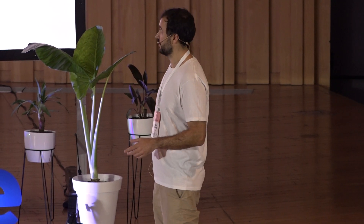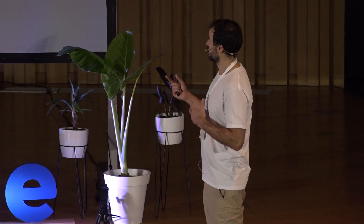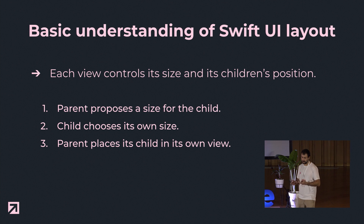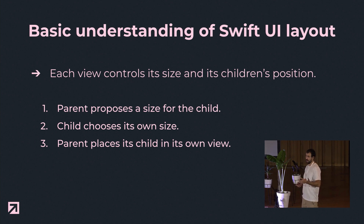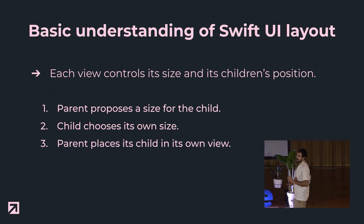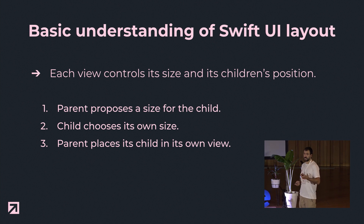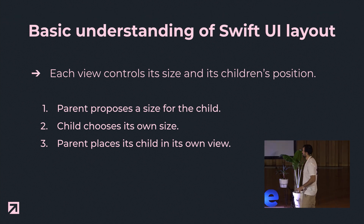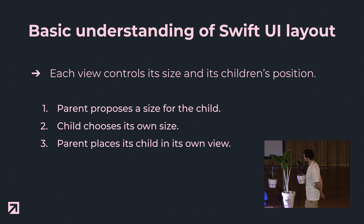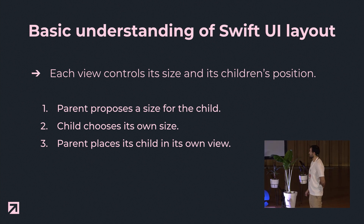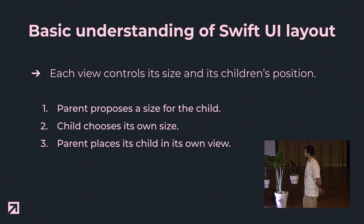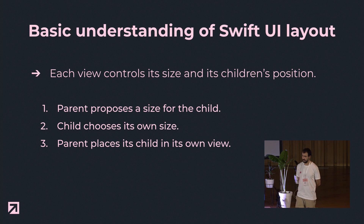SwiftUI provides several techniques for this, but before that it's important to understand how the layout system of SwiftUI works — it's different from UIKit. In UIKit, each parent sets up the size and frame of each child. In SwiftUI, each view is responsible for setting its own size and placing the child inside its own view. The process follows three steps: the parent proposes a size for the child, the child chooses its own size, and finally the parent places its child in its own view.